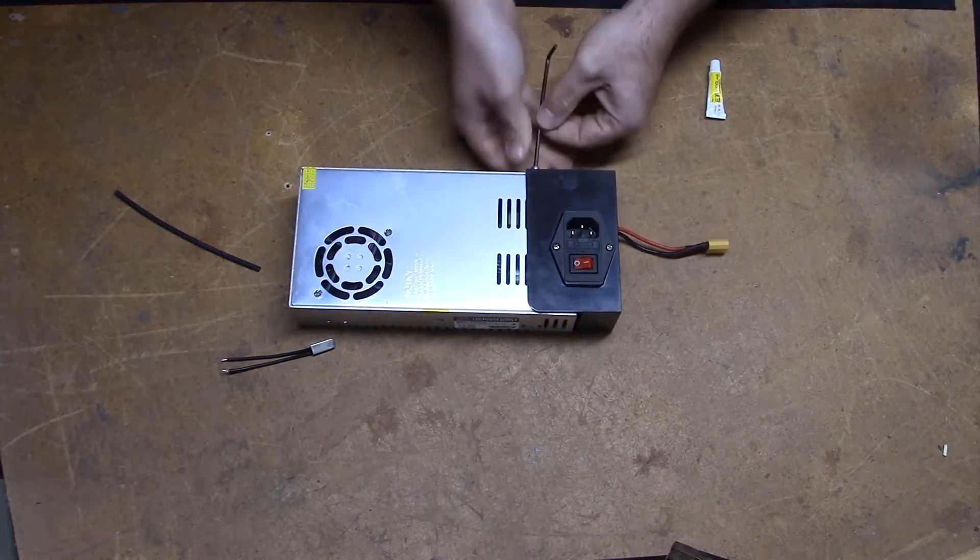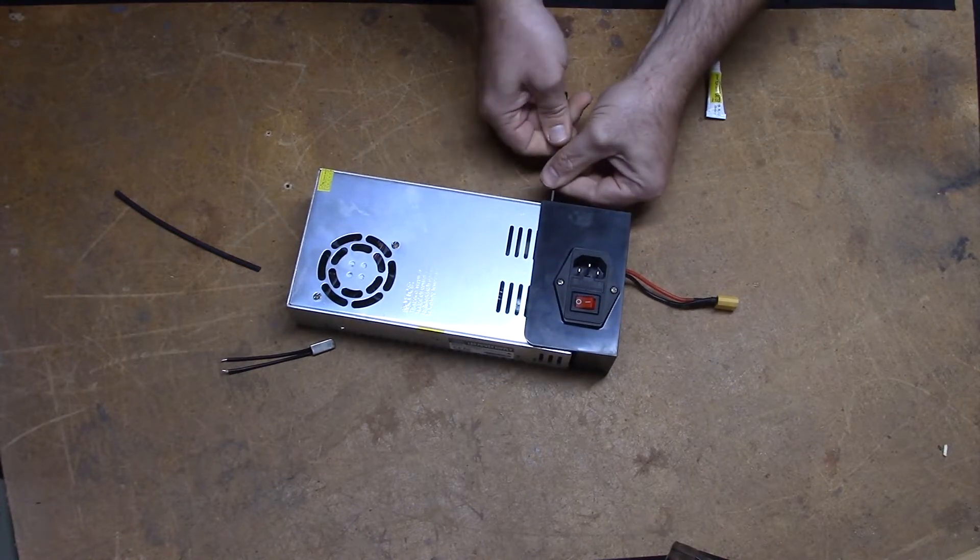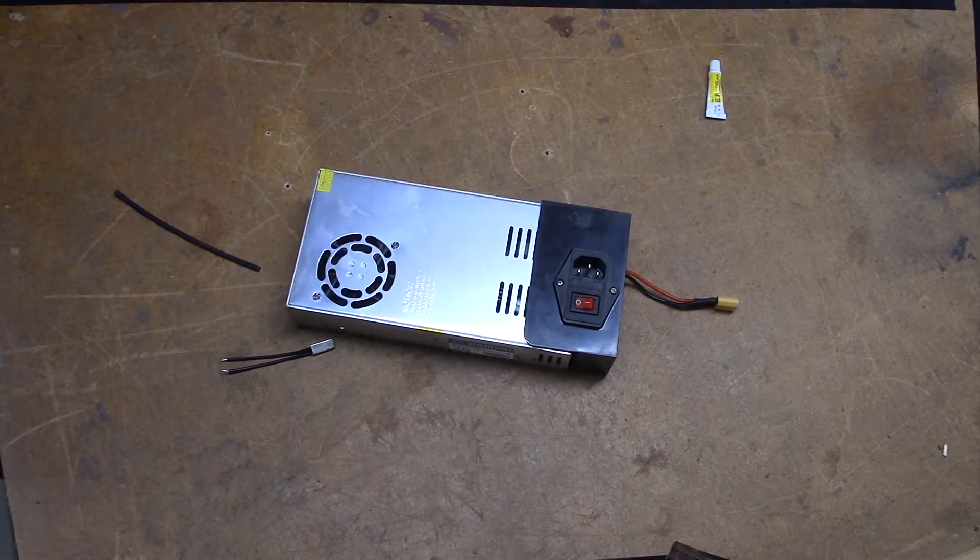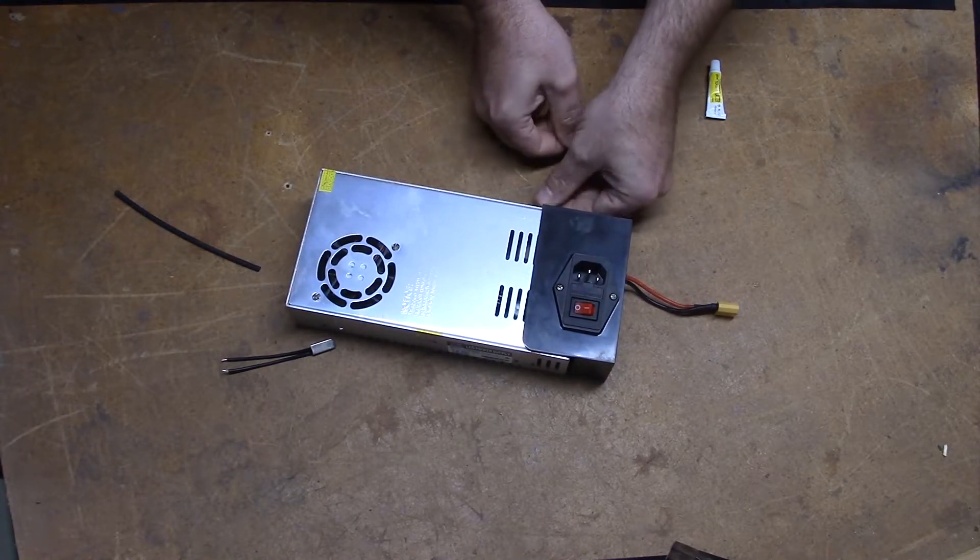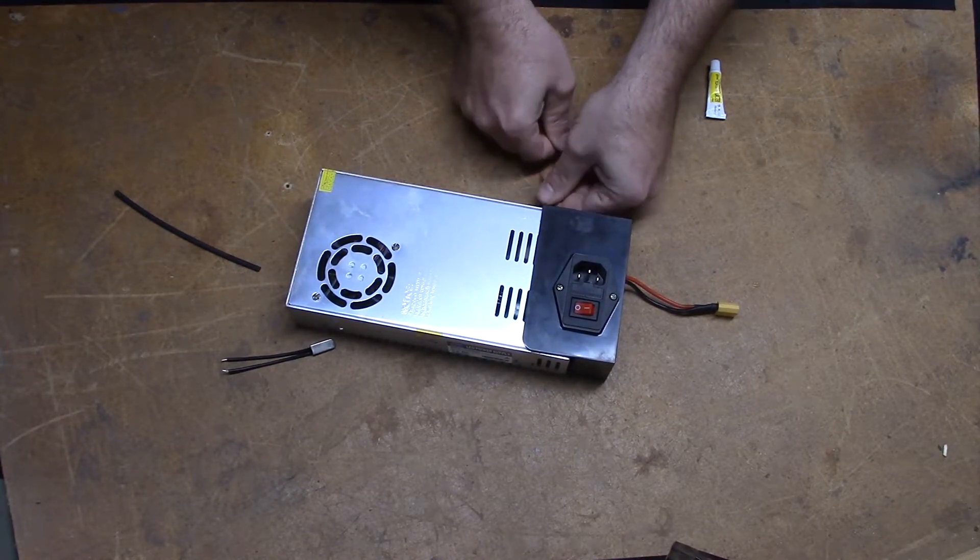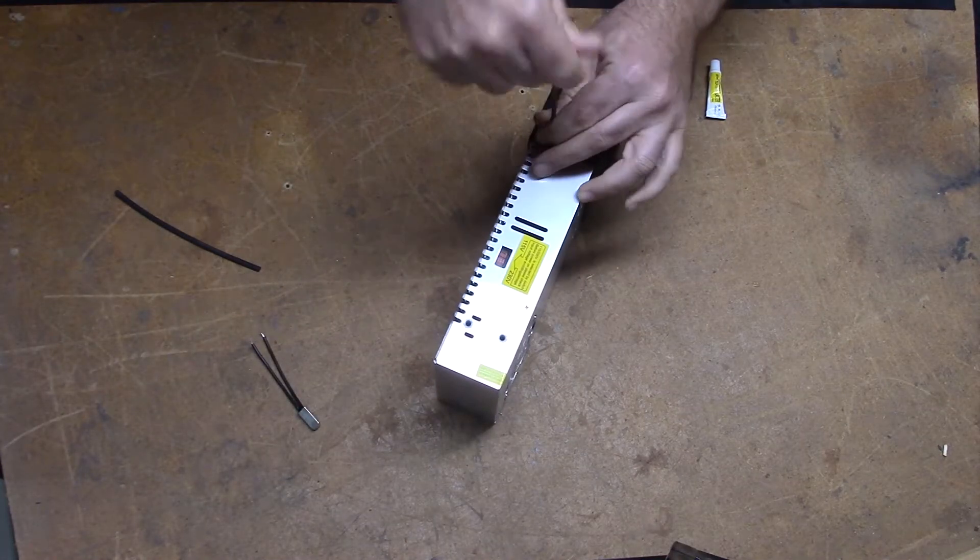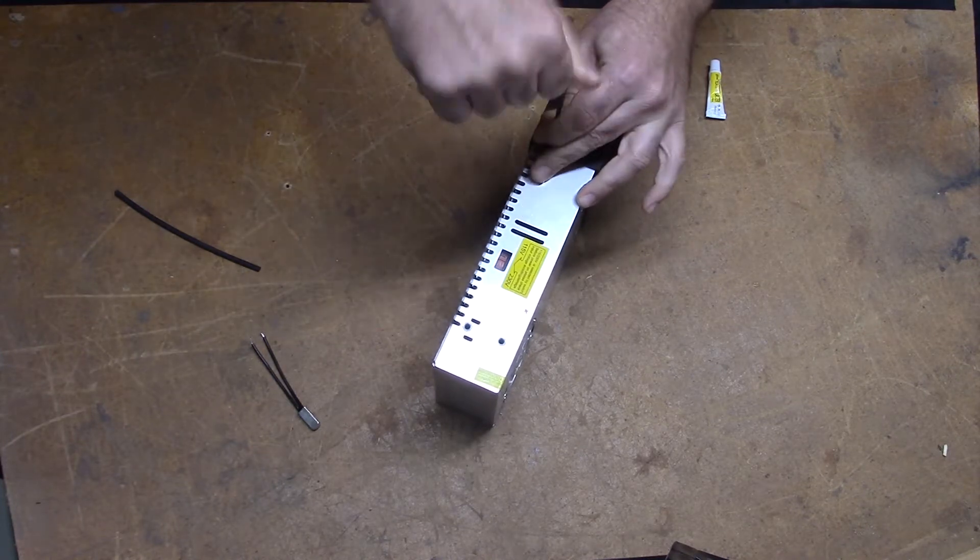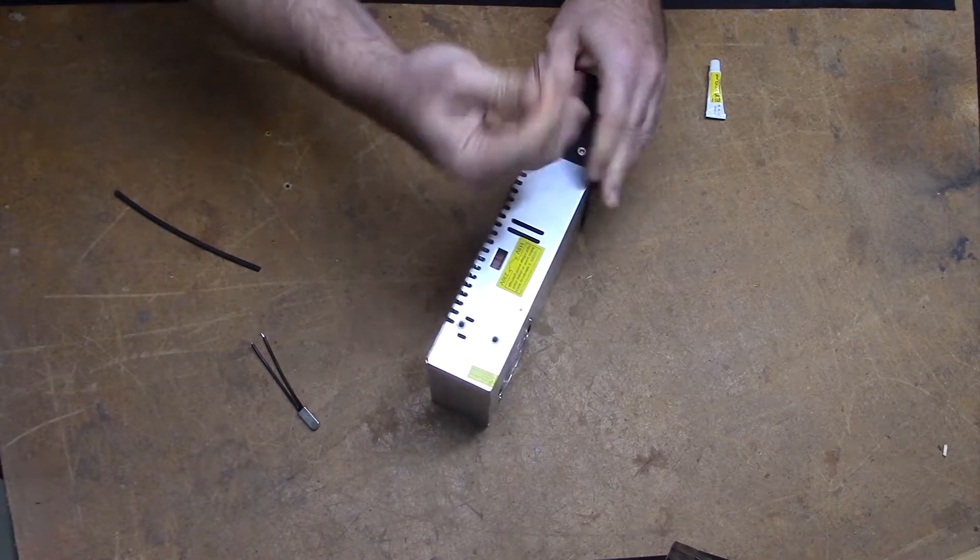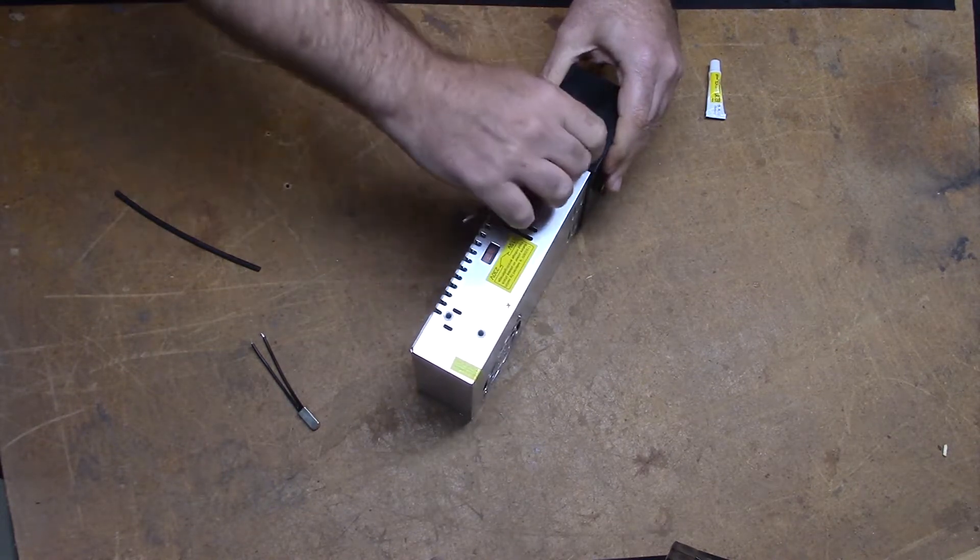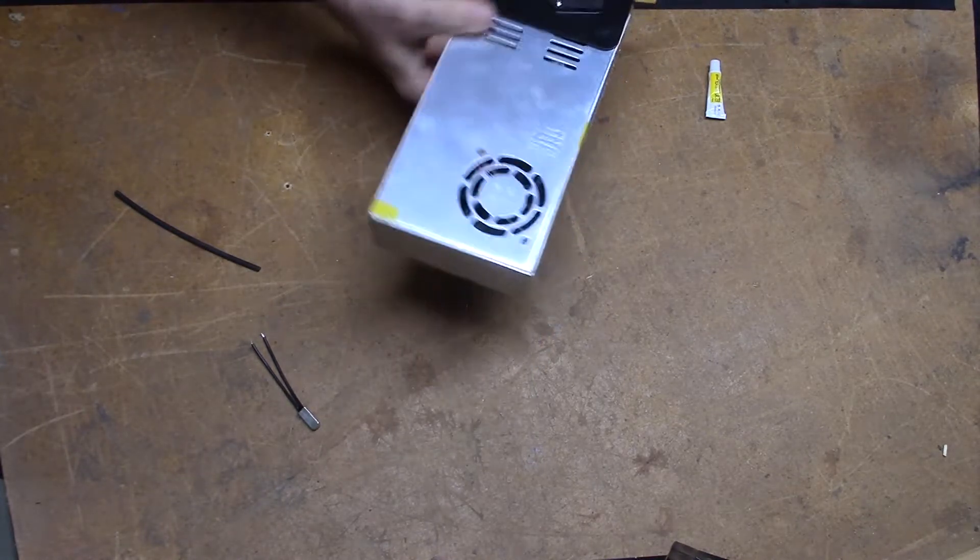We need to put the mains protective cover back on with these two Allen screws. Make sure you tighten these up, quick quarter turn on there, and then we can test the unit.